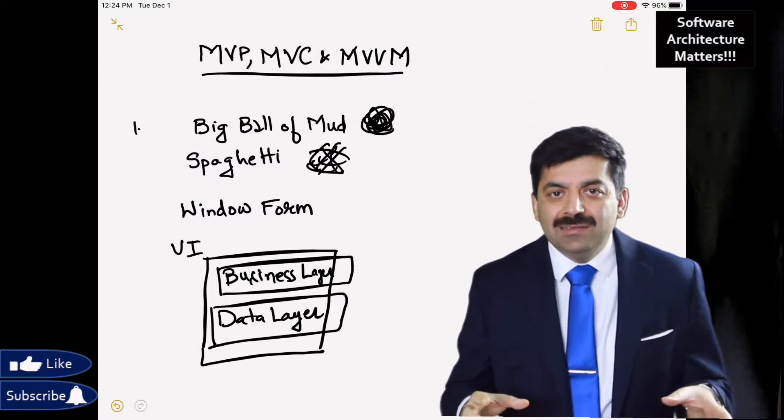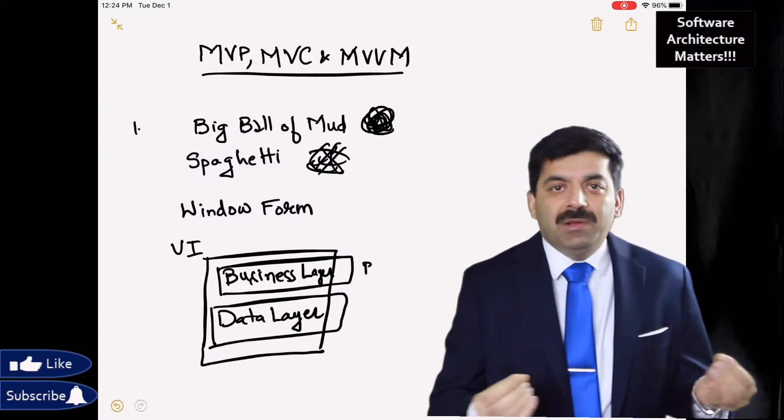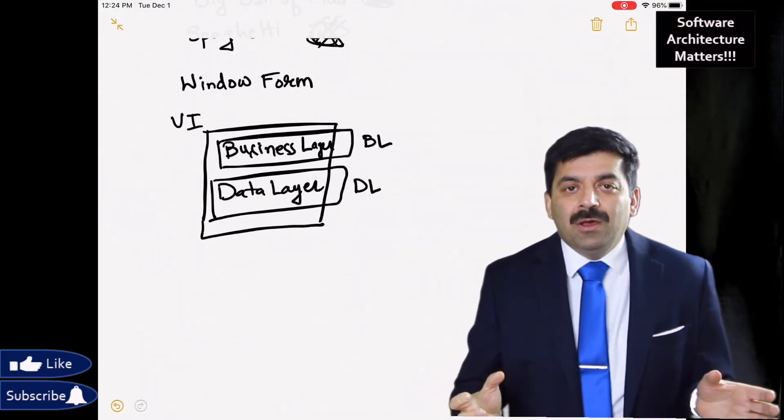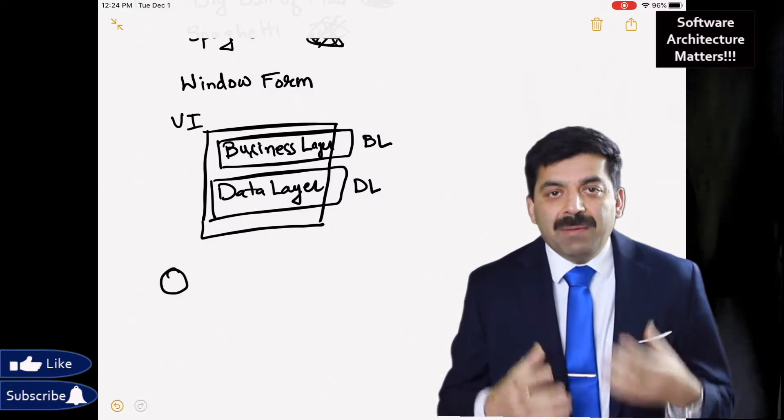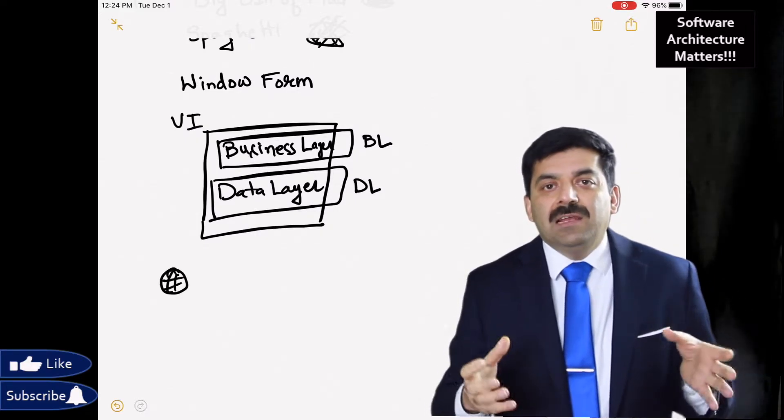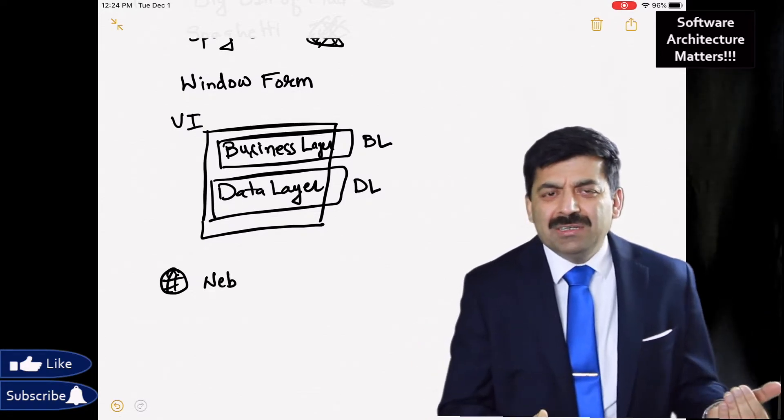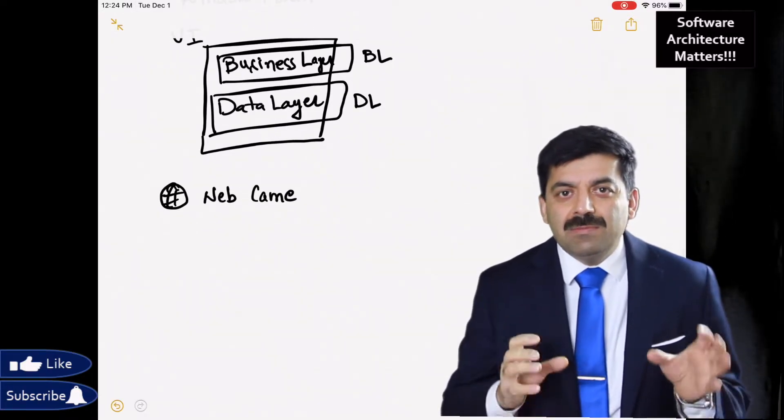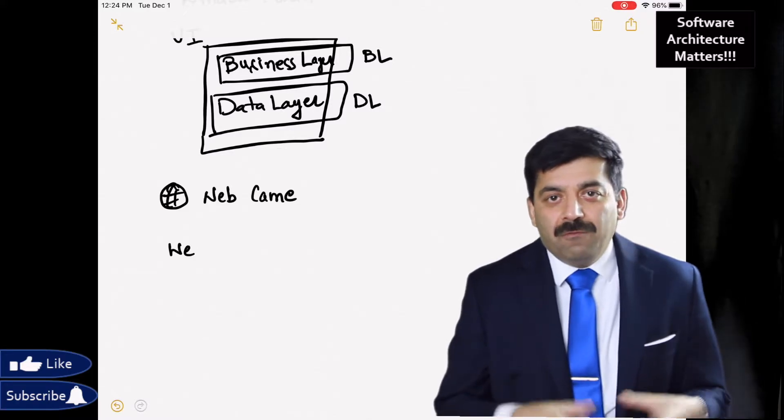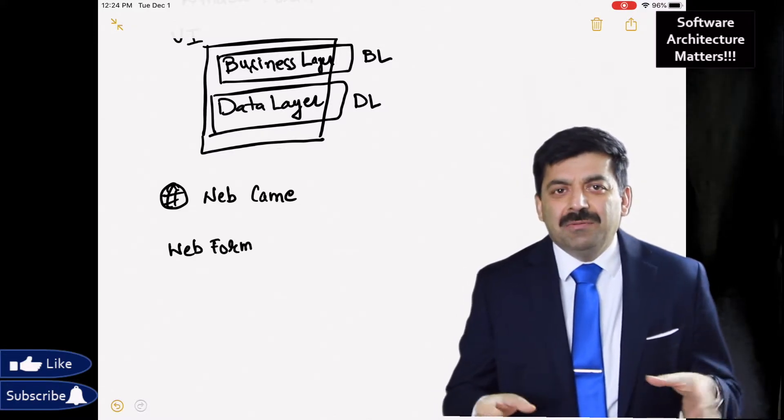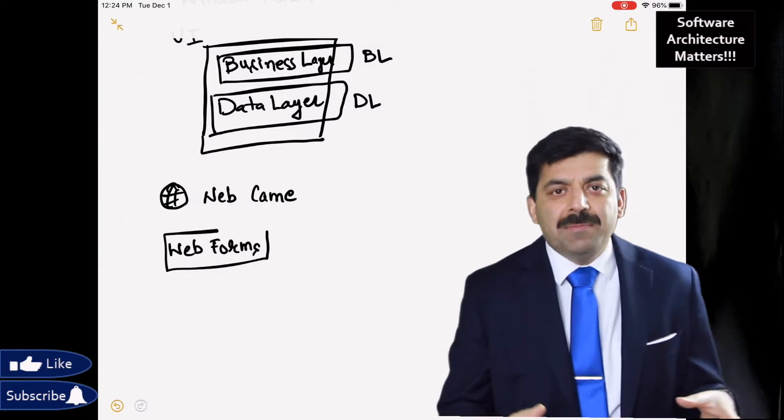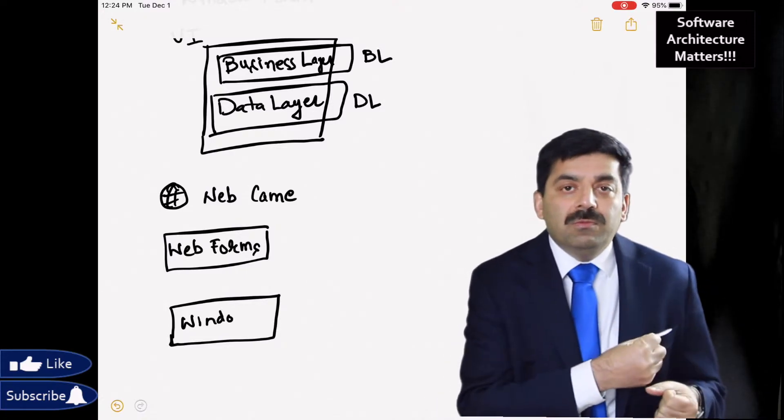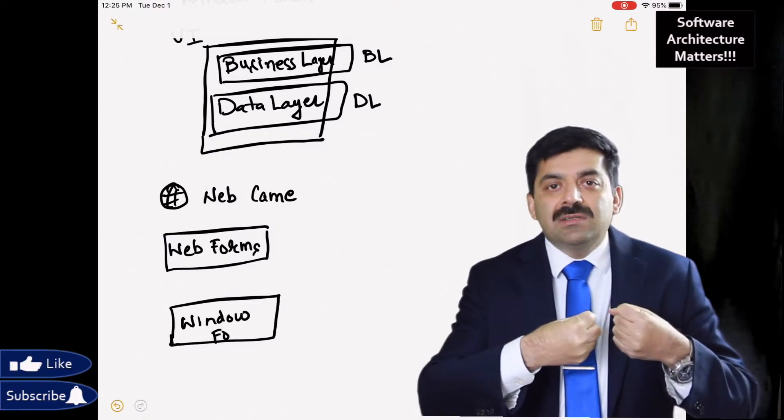Then what happened - web came. Now everybody expected same application to be available on the web. So we had logic which was being used by window forms and we had to deploy similar application on web. It didn't make sense that we duplicate same data access and business logic there.